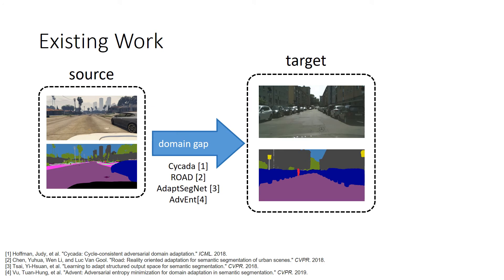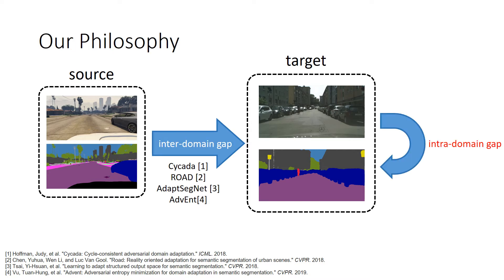Existing unsupervised adaptation approaches have been proposed to align the gap between the source and target domain. These approaches either work on the feature level or image level to learn domain-invariant features. However, existing approaches have only considered the distribution gap between source and target domain, called the inter-domain gap. We found that there is also a large distribution gap among the target data itself, called the intra-domain gap.